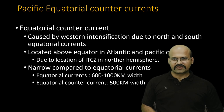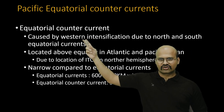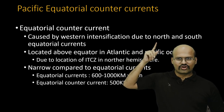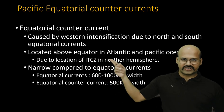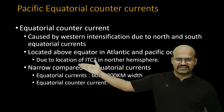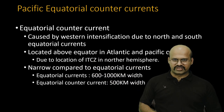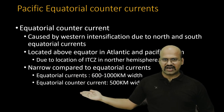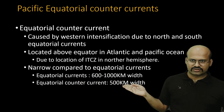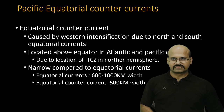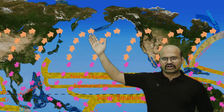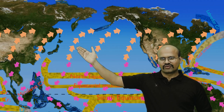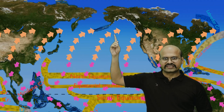The Pacific equatorial counter current is caused by western intensification from both the North and South Equatorial Currents and the lack of wind in this region. It is located above the equator in the Atlantic and Pacific Oceans because the ITCZ remains in the northern hemisphere throughout the year. These counter equatorial currents are thinner or narrower compared to the equatorial currents. In this region, winds — the westerlies — are permanent winds flowing from the southwestern to northeastern direction, applying a dragging force on the ocean water below them.